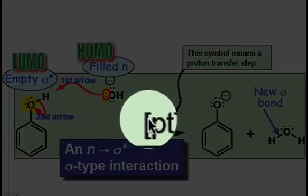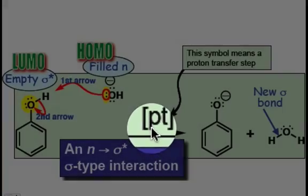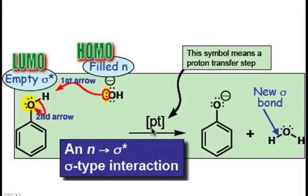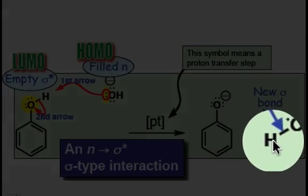We symbolize our proton transfer step with this bracket, PT. PT stands for proton transfer, and you'll see this notation several times throughout this course. The new sigma bond that got formed here was our OH, between our hydroxide and our hydrogen.